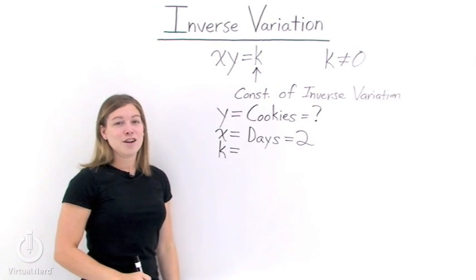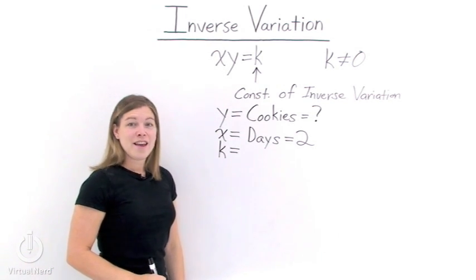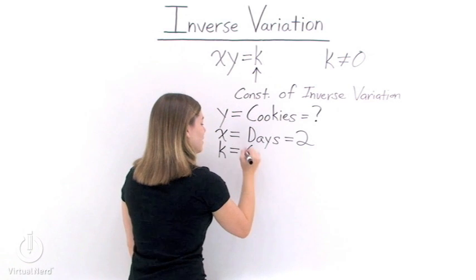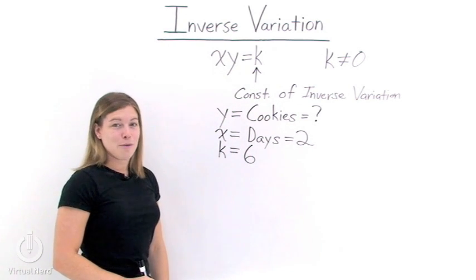Now for k. k is our constant of inverse variation. And in our problem, that was 6. So now we have all the pieces that we need.